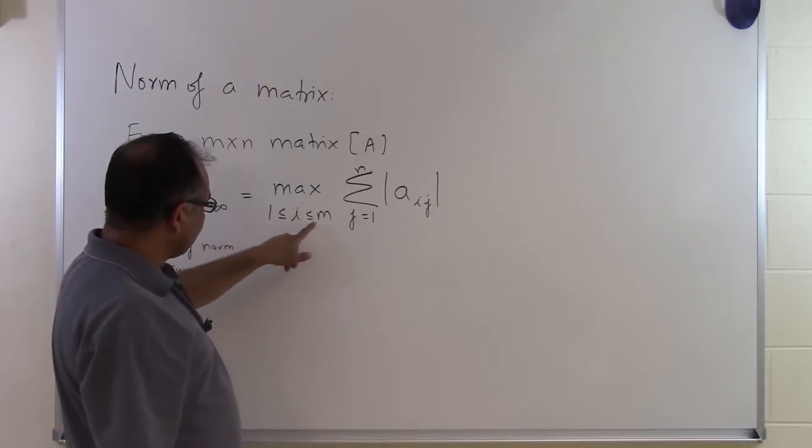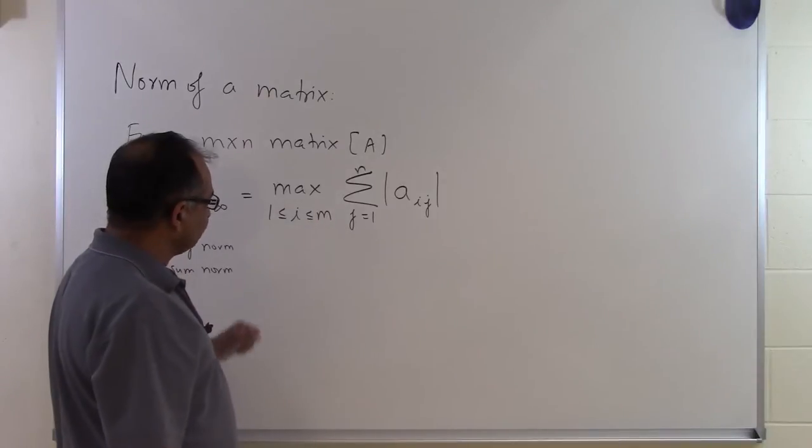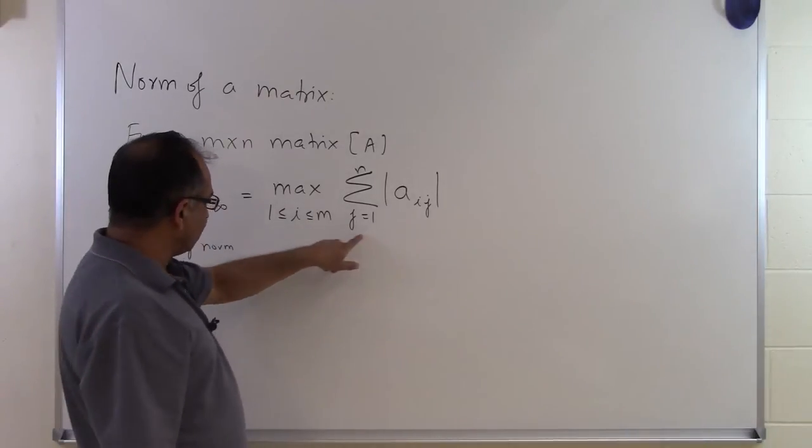So when we say 1 less than or equal to i less than or equal to m, that means that i will take the value of 1, 2, 3, 4, 5, 6, all the way up to m, and you are going to find this summation for each value of i.